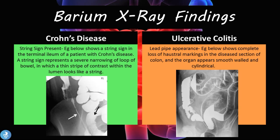Barium X-ray findings: in Crohn's disease we have the string sign, as seen in the terminal ileum of a patient with Crohn's disease. A string sign represents a severe narrowing of the loop of bowel in which a thin strip of contrast within the lumen looks like a string — the intestinal lumen has narrowed to such a point because of that severe inflammatory narrowing.